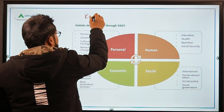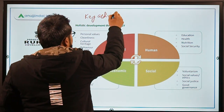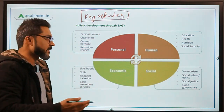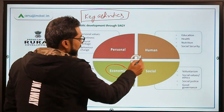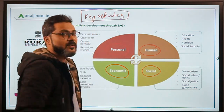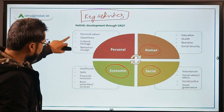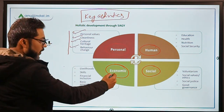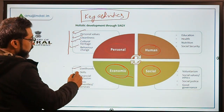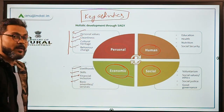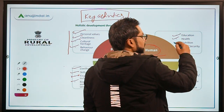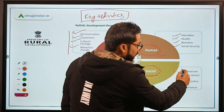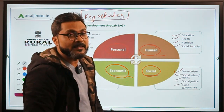The key activities under Sansad Adarsh Gram Yojana focus on holistic development for villages. By personal development, it means personal values, cleanliness, cultural heritage, and behavior change. Economic development includes livelihood, skills, financial inclusion, and basic amenities and services. Human development covers education, health, nutrition, and social security. And finally, social development includes social volunteerism, social values, social justice, and good governance.